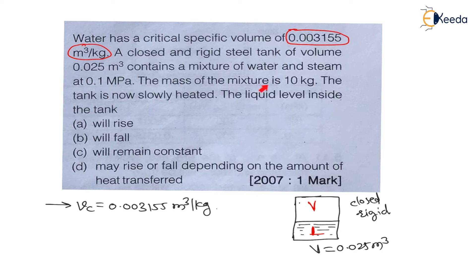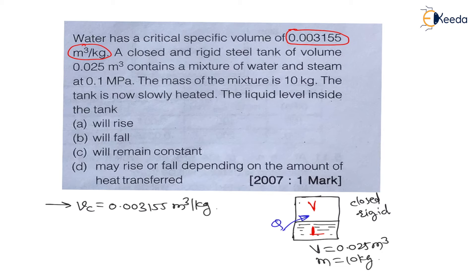The mass of the mixture is 10 kg — the total mass is given as 10 kg. After that, the tank is now slowly heated, meaning heat is supplied to this tank.